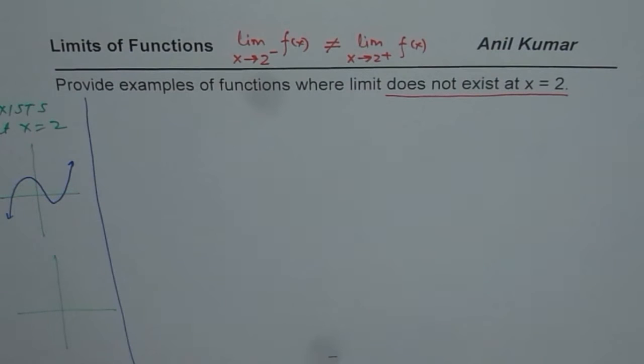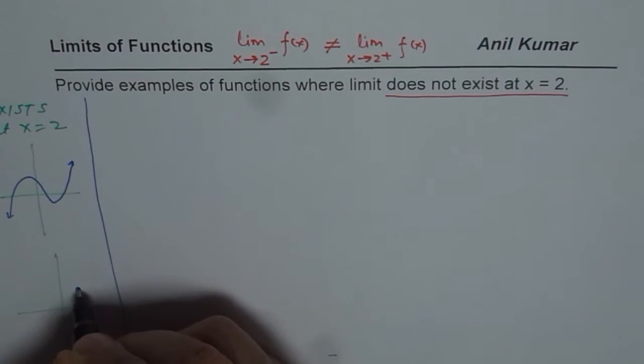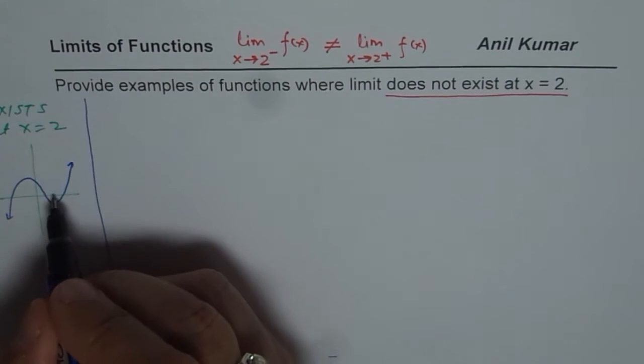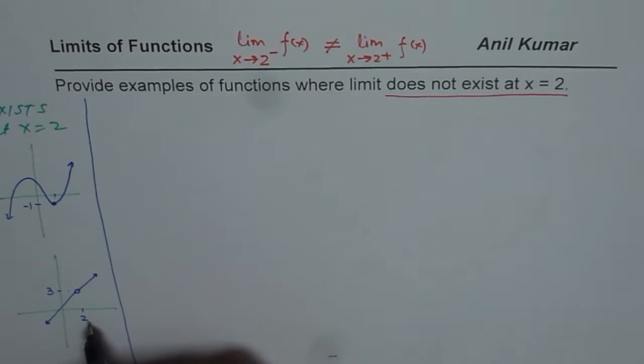And a function which may have a hole, let's say this is 2 and which may have a hole. In these functions we are approaching a fixed value at 2. Let's say at 2 the value is 3, or at 2 the value is minus 1. In both these functions, limit exists at 2.